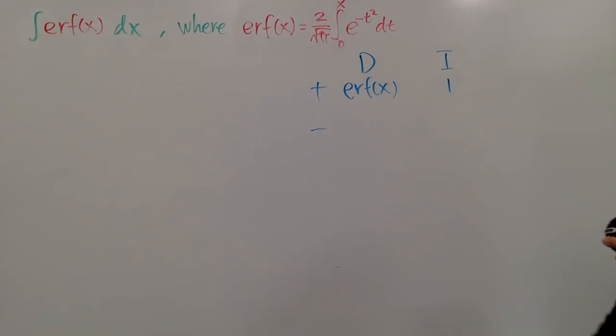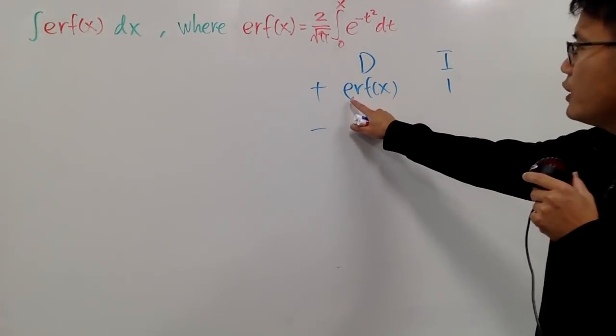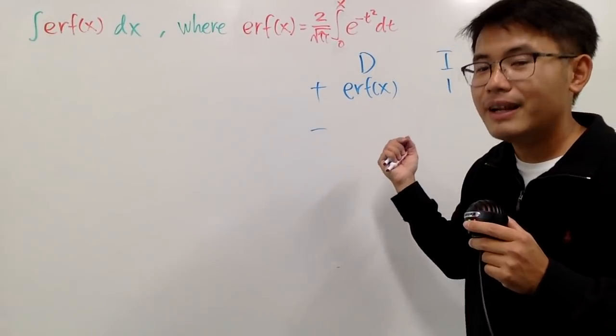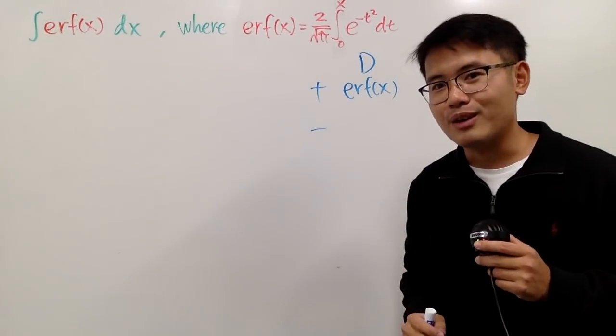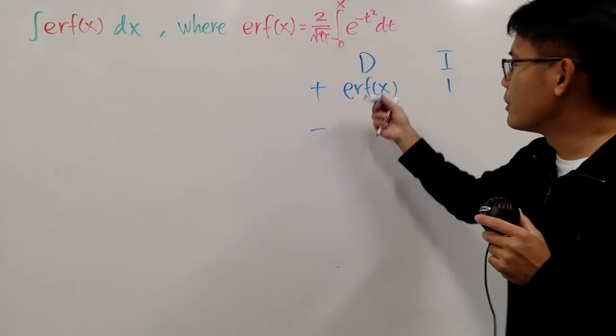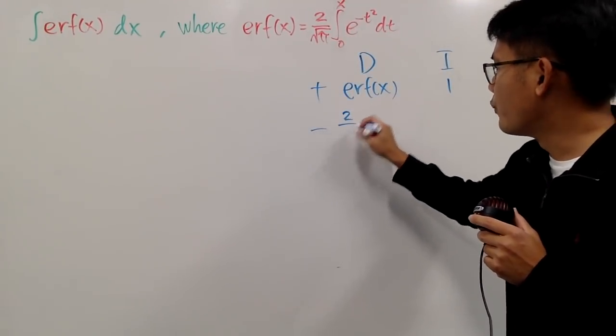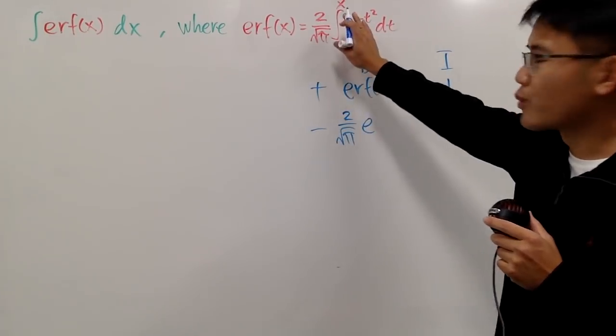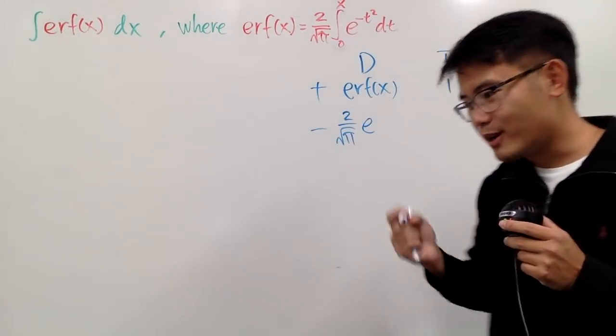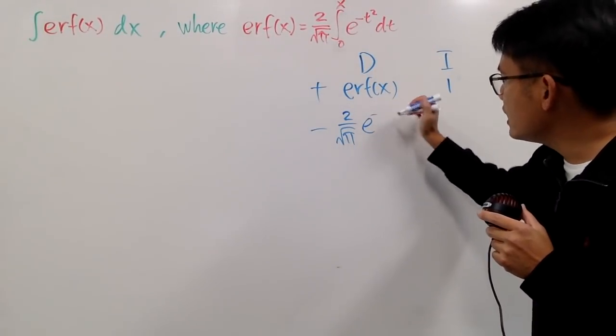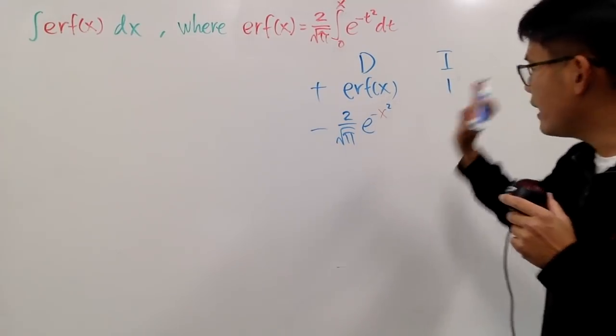I want to integrate just one. And now let's see, when I differentiate erf of x, you pretty much look at this and differentiate that. And by fundamental theorem of calculus part one, I can just put the x right here. That's pretty much it. And this is the constant multiple. So I'll just write this down, 2 over square root of pi, times, no more integral, because the derivative and integral cancel each other out pretty much, and put the x right here. So you have e to the negative x squared, and that's it.